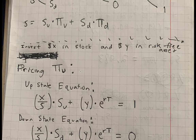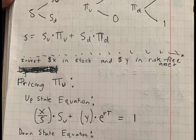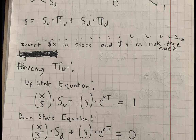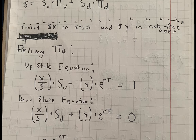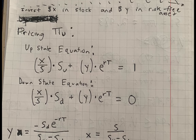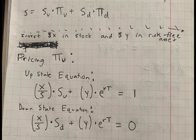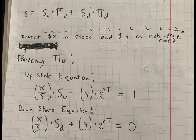To price π_u, the up state arrow security, consider a situation where you invest x dollars in stock and y dollars in the risk-free asset. We set up an up state equation and a down state equation. Recall that in the up state π_u pays one, and in the down state it pays zero. In the up state, we buy x divided by s units of stock, since if x equals s you would buy exactly one stock.